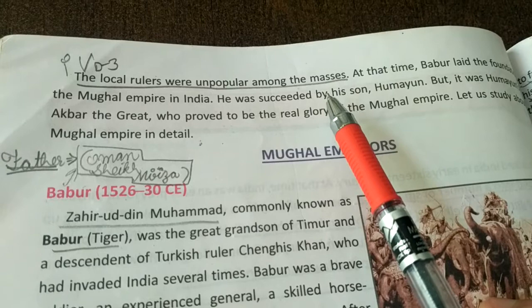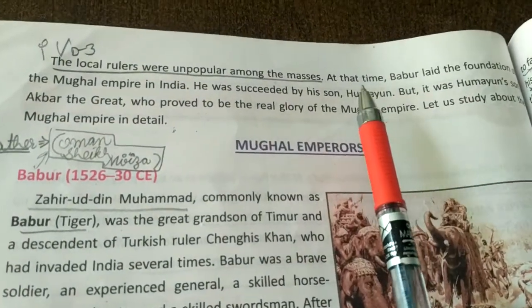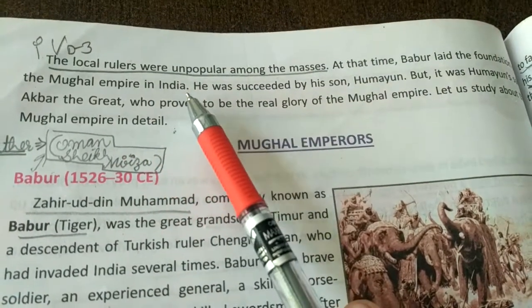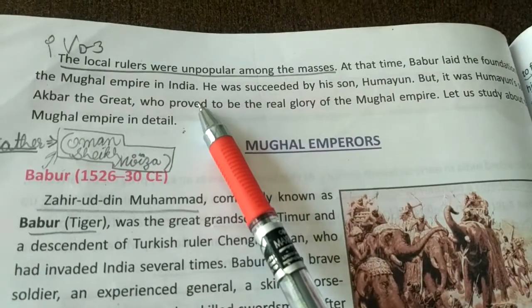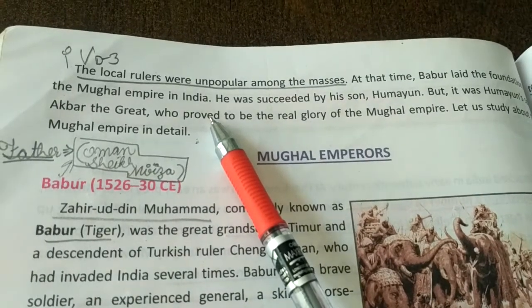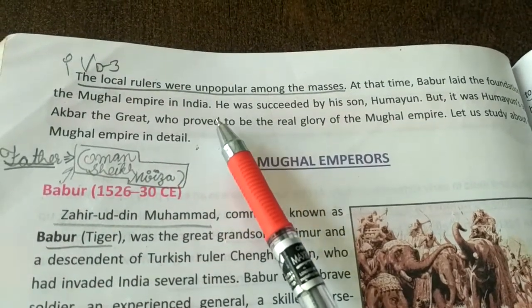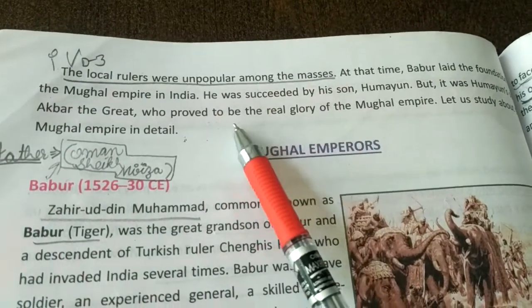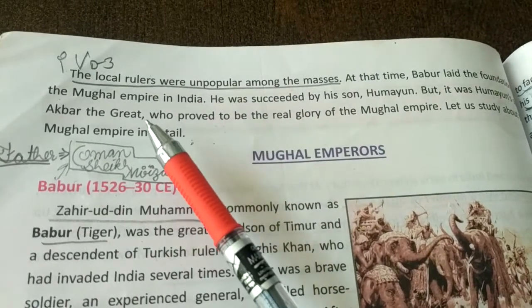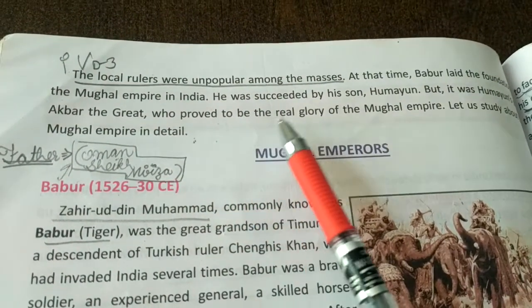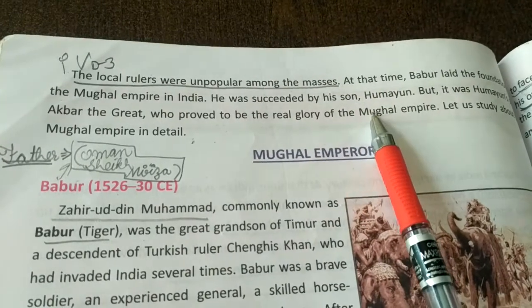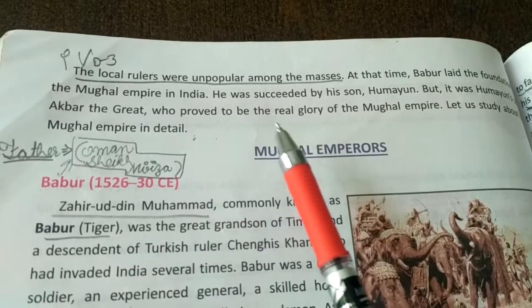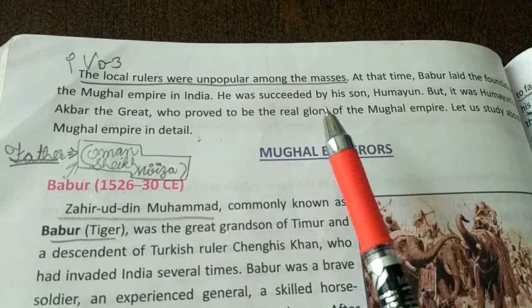The local rulers were unpopular among the masses. Babur took advantage of the lack of unity among the local people and laid the foundation of the Mughal Empire in India. He was succeeded by his son Humayun, but it was Humayun's son Akbar the Great who proved to be the real glory of the Mughal Empire.